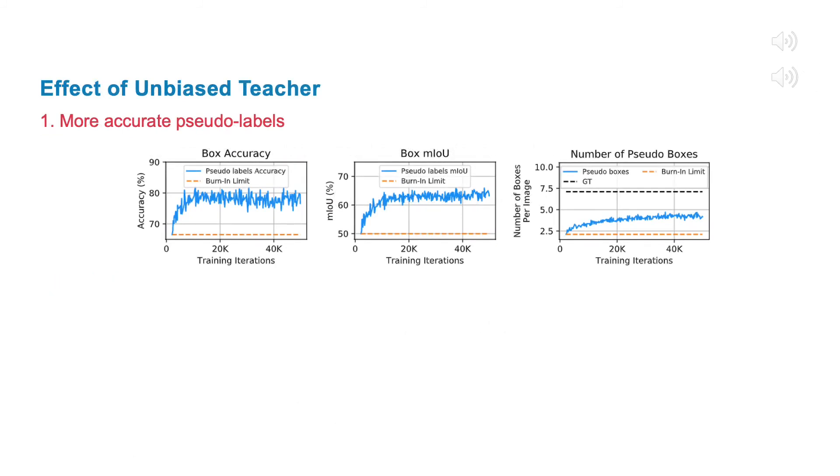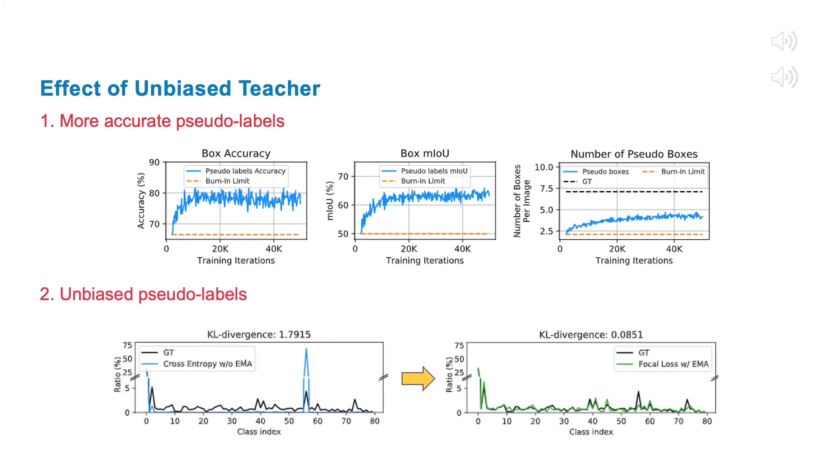With our proposed mutual learning mechanism, we can get more accurate pseudo-labels. Also, with the focal loss and EMA, we can alleviate the pseudo-label bias issue and produce unbiased pseudo-labels from the teacher model.